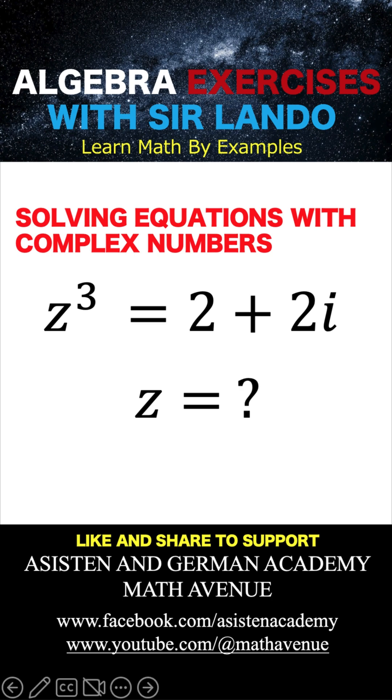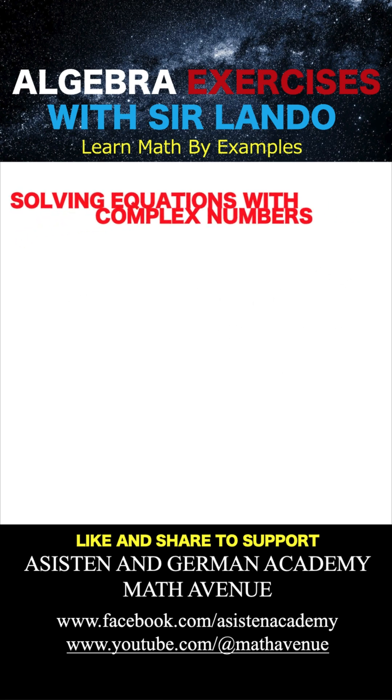Now what does this equation mean? This means that we are looking for a complex number z such that when you raise it to the third power, that is equal to the complex number 2 plus 2i. Now let's solve this problem together.